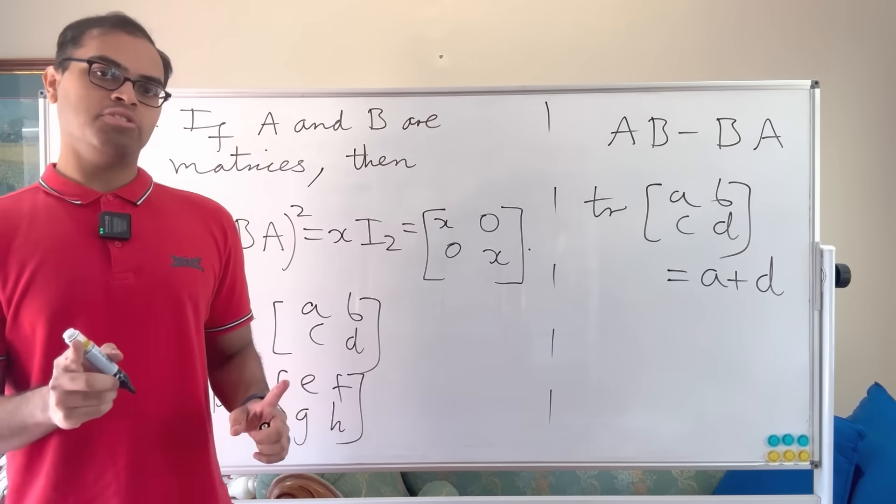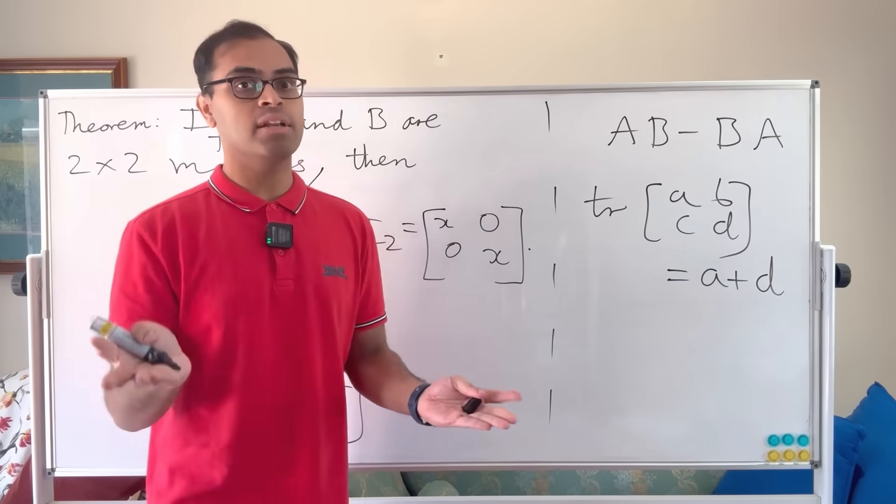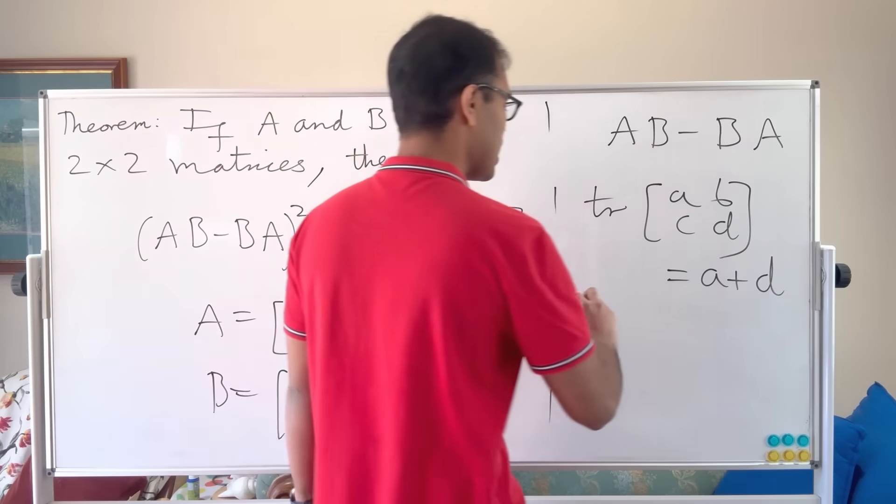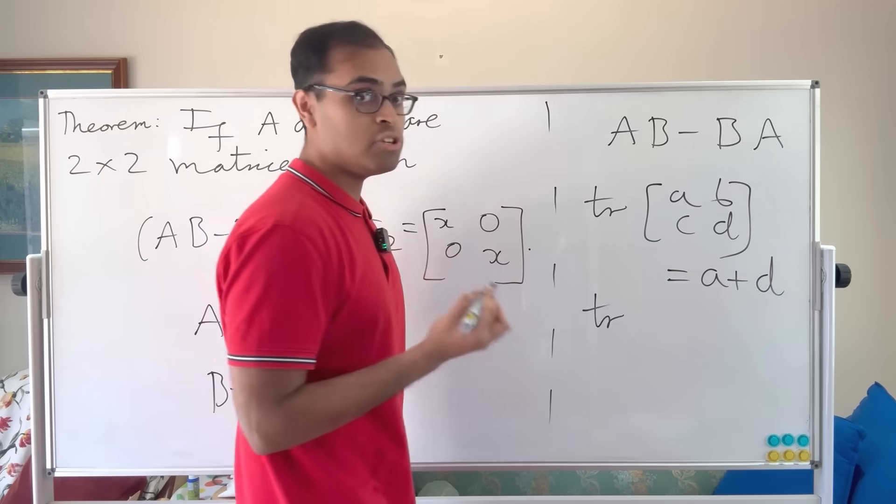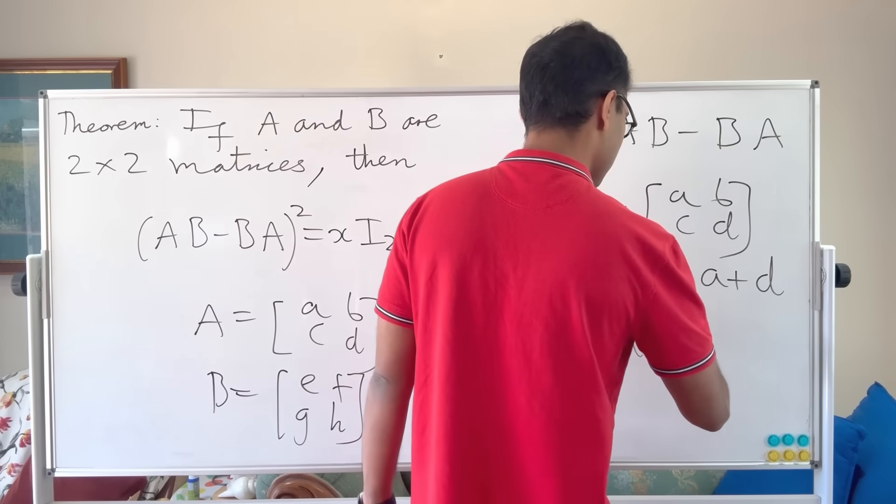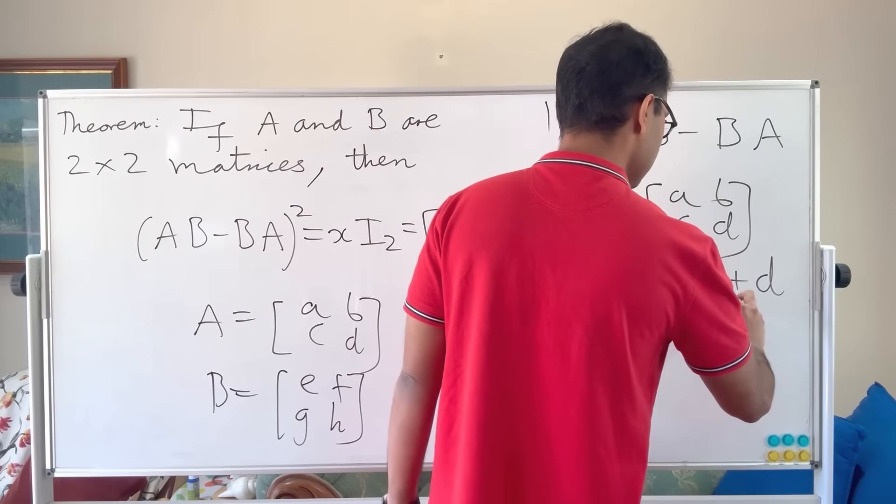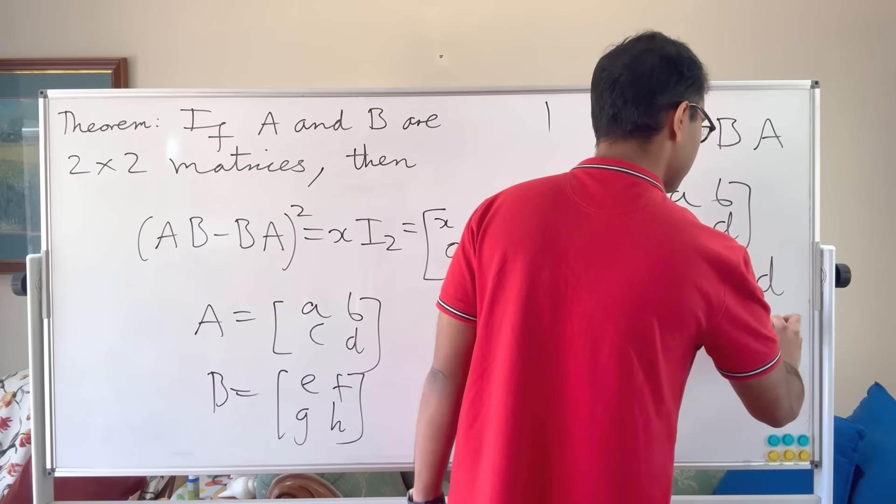Now, there's a beautiful relation on the trace. If you haven't seen it, you can prove it for n by n matrices. It's very beautiful and a very important linear algebra or matrix statement is that the trace of A times B is always equal to the trace of B times A.